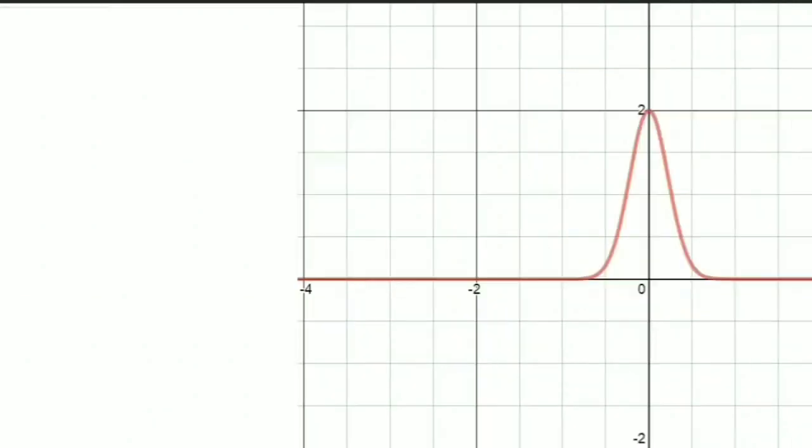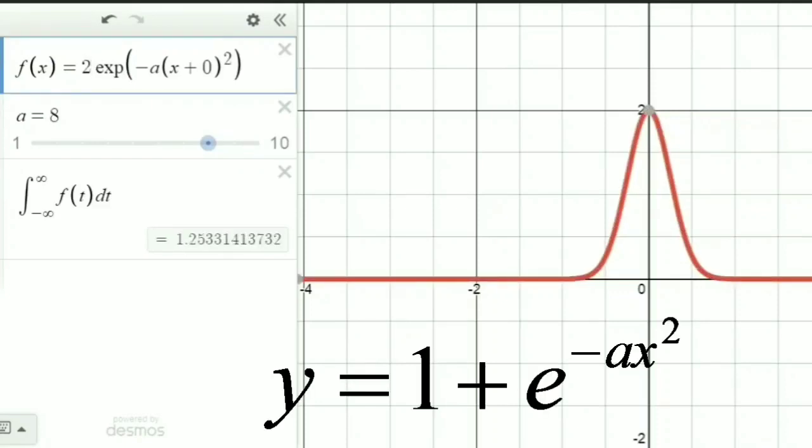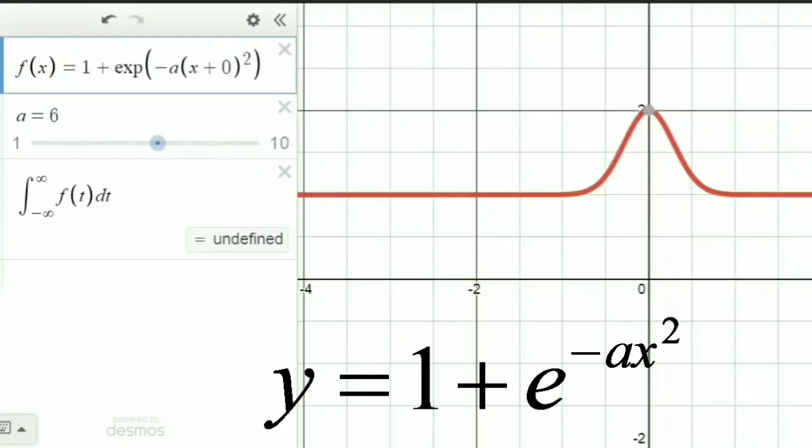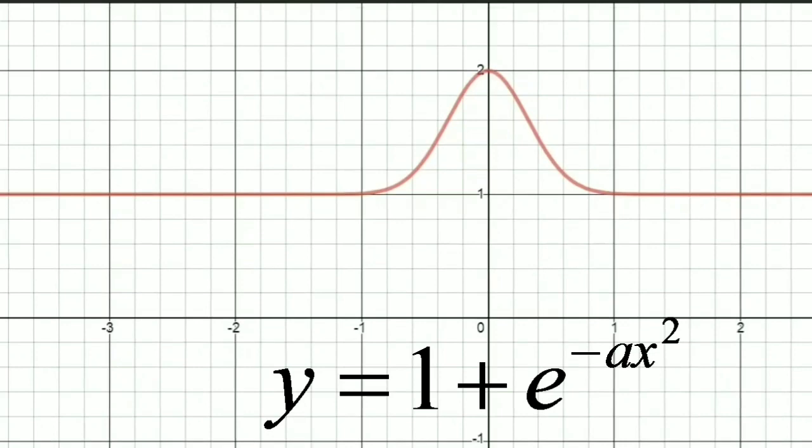Now let us add a constant with the Gaussian function. Here I am adding 1. So the expression has become 1 plus e raised to minus ax square. Now, if you look at the curve, we can see that initially the curve was at y equal to 0. Now the whole curve has been shifted to y equal to 1.